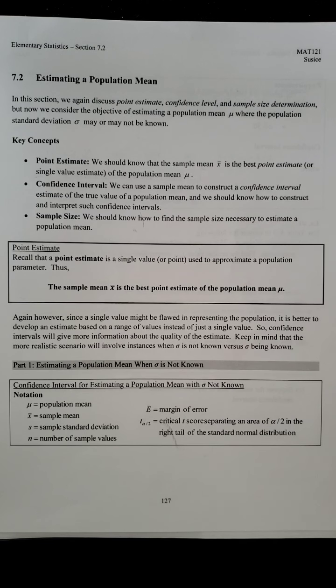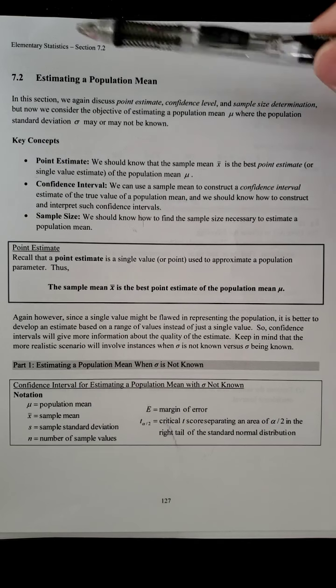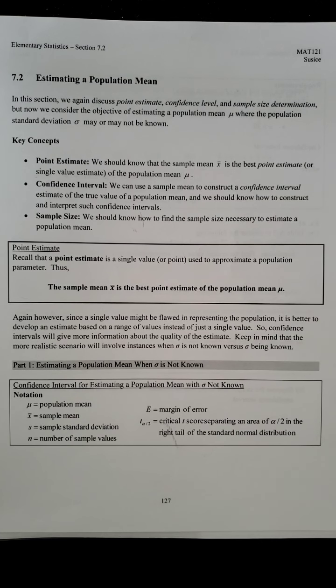So now in the last section, we have 7.2, which is now going to be estimating a population mean. So it's a little different than it was in the previous section, which was estimating a population parameter or population proportion. This one is a population mean. So some of the variables are a little different, but the process is very, very similar.